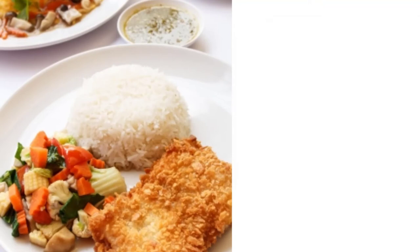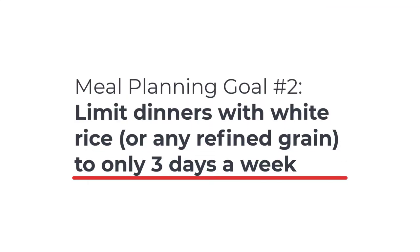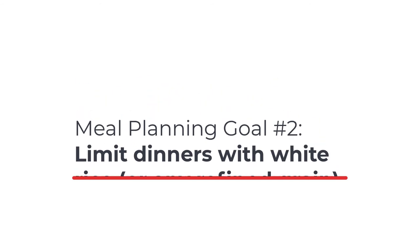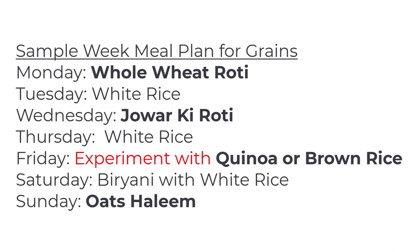Another tip for meal planning: if you're going to have white rice, limit it to only three days of your week rather than all seven days. Do three days of white rice and the other four days experiment with a whole grain. You can do whole grain, whole wheat, or high-fiber roti. At least one day, experiment with a different type of whole grain. Try bajra, jowar, oats, or quinoa instead of regular white rice.